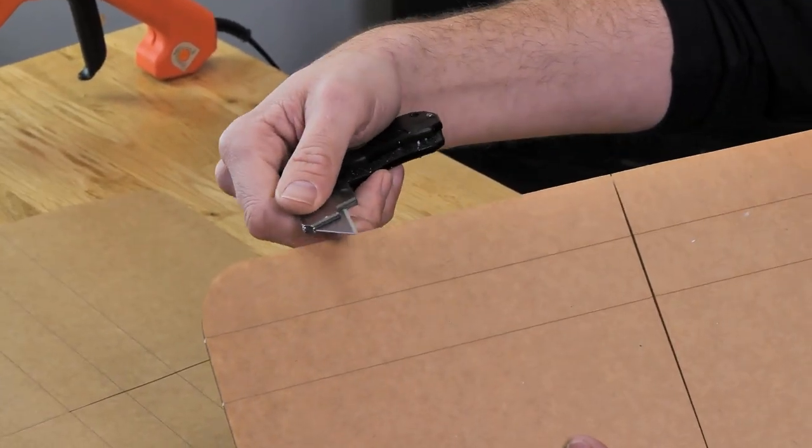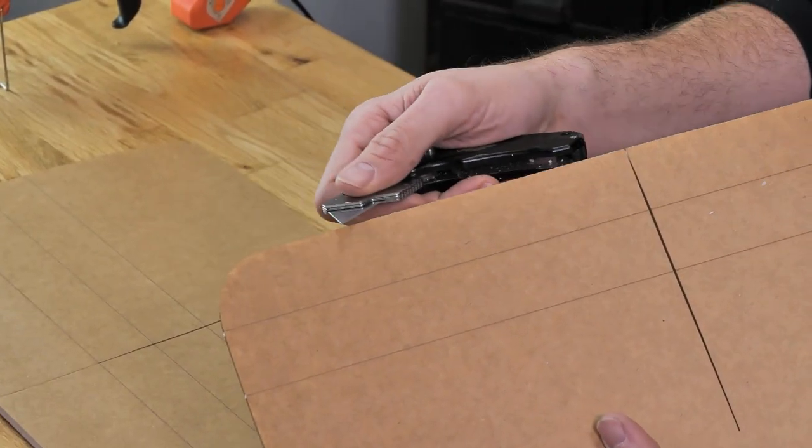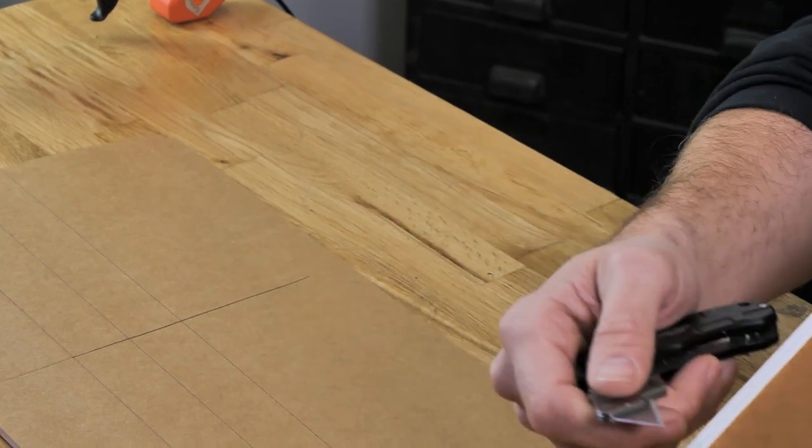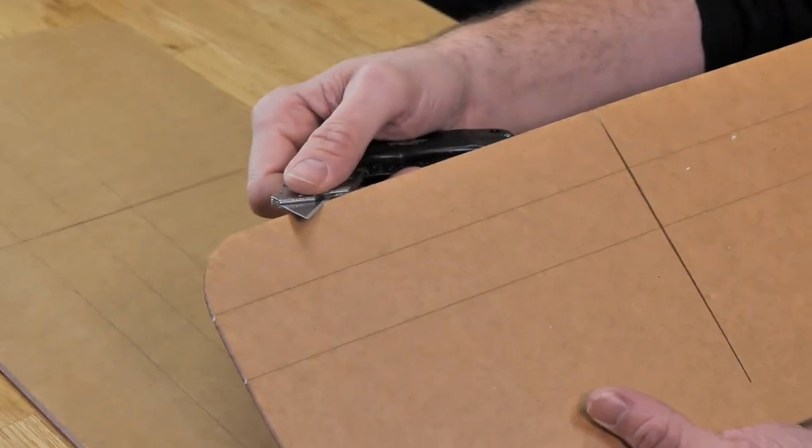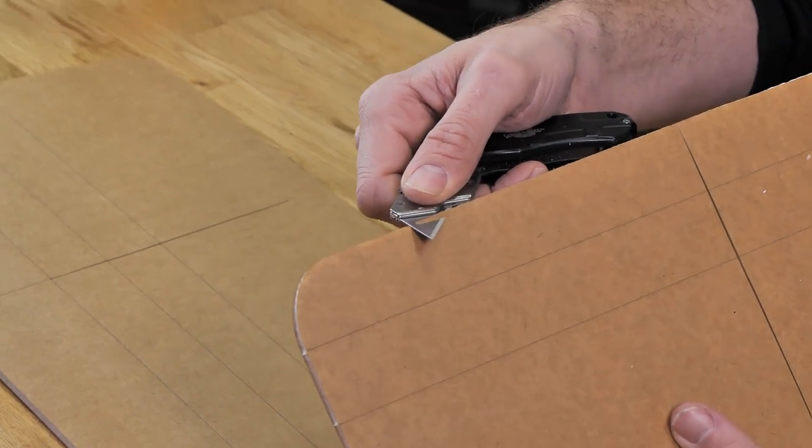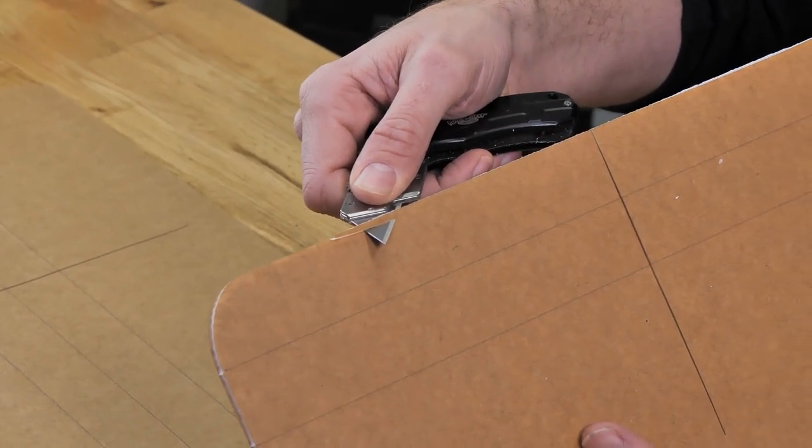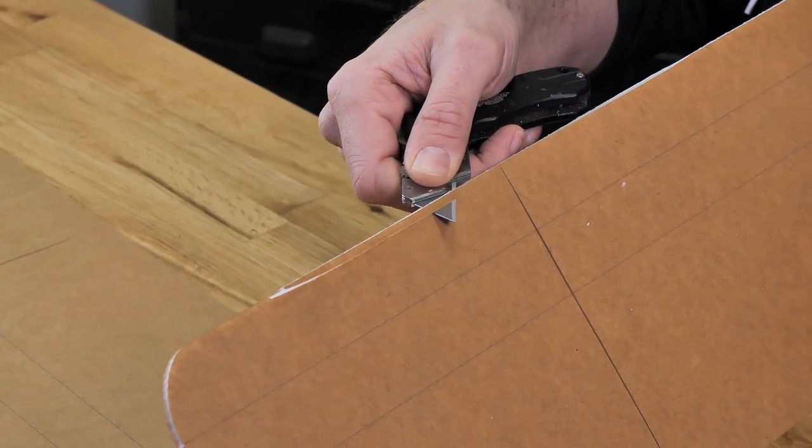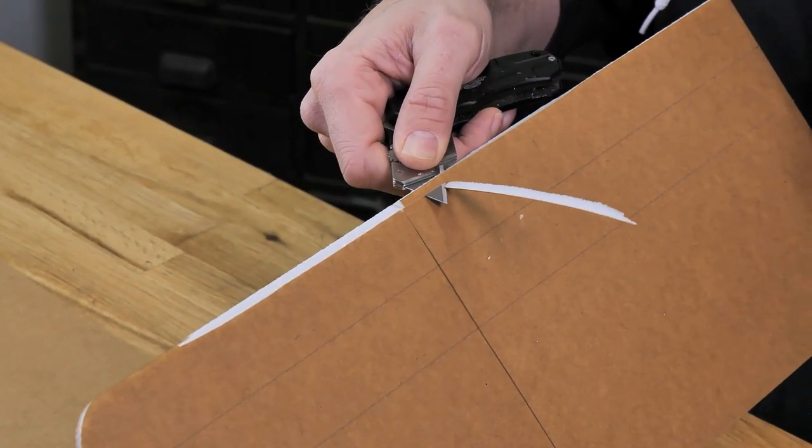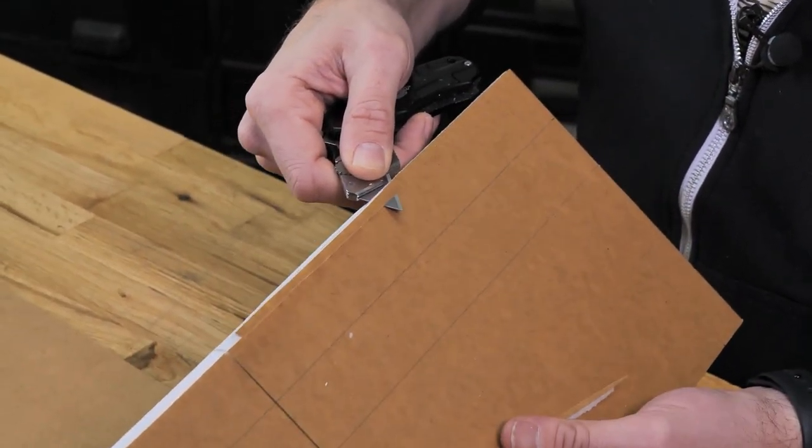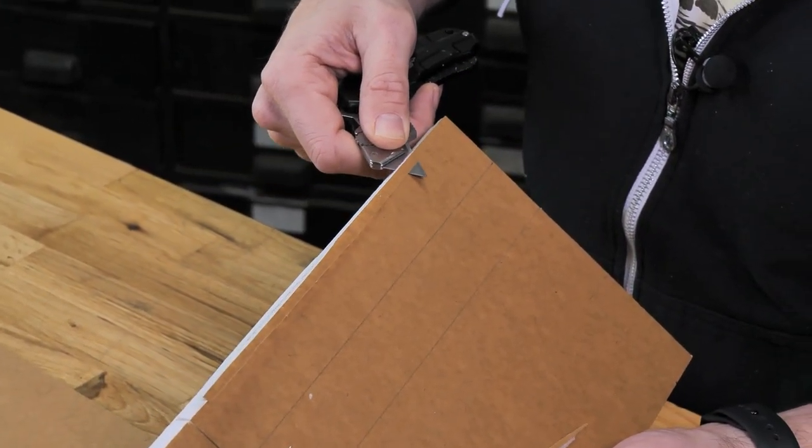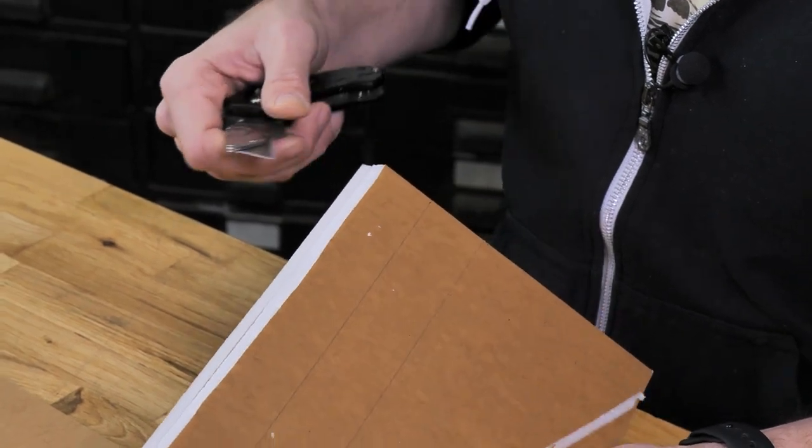So our first cut here, you're going to notice that we're not going to hold our razor blade 90 degrees. We're going to hold it at an angle, and I just need to start it right at the point where this foam meets. I'm going to cut down and keep my razor blade just above the paper as I pull towards me.